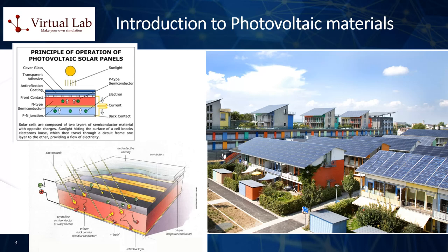Photovoltaic materials are substances that can generate electric current or voltage when exposed to light, particularly sunlight. This is a result of the photovoltaic effect, a physical and chemical phenomenon discovered in the 19th century. Photovoltaic materials are primarily used in the construction of solar cells, which are then assembled into solar panels for use in solar power systems. This enables the direct conversion of sunlight into electricity, a renewable and environmentally friendly source of energy.